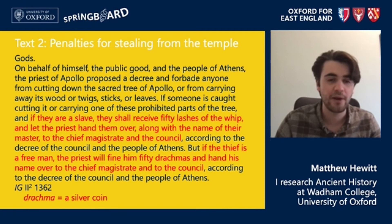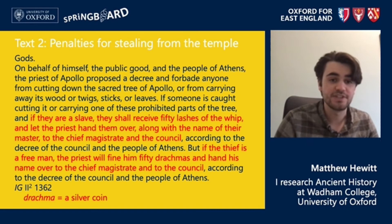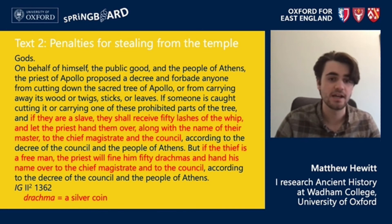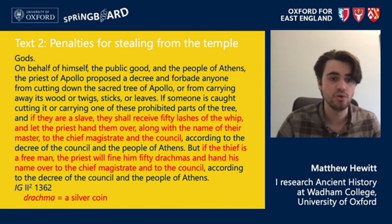'If someone is cutting off or carrying one of these prohibited parts of the tree and they are a slave, they shall receive 50 lashes of the whip, and let the priest hand them over along with the name of their master to the chief magistrate and the council. But if the thief is a free man, the priest will fine him 50 drachmas and hand his name over to the chief magistrate and to the council according to the decree of the council and the people of Athens.'